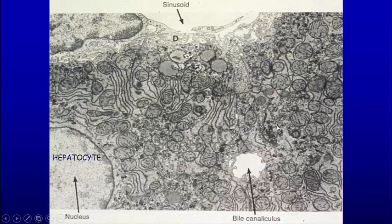In an electron micrograph, we can see the smooth endoplasmic reticulum, the rough endoplasmic reticulum, mitochondria with a tubular type cristae like steroid secreting cells have, because the hepatocyte has all this smooth ER for conjugating enzymes that are necessary to digest and detoxify things.